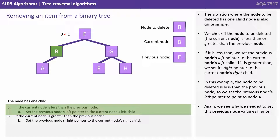The situation where the node to be deleted has one child is also quite simple. We check if the node to be deleted is less than or greater than the previous node. If it's less than, we set the previous node's left pointer to the current node's left child. If it's greater than, we set its right pointer to the current node's right child. In this example, the node to be deleted is less than the previous node, so we set the previous node's left pointer to point directly to node A. Again, we now see why we needed to set the previous node value earlier on.